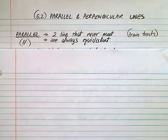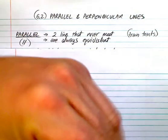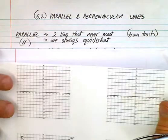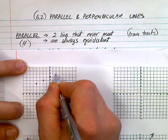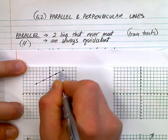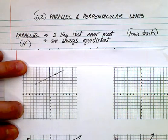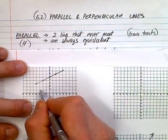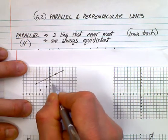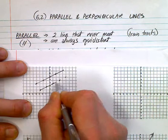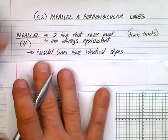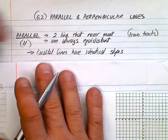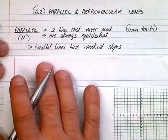Think about lines on a graph — what would constitute a parallel line? If I have a line with a certain slope, can you identify that slope? If I want a parallel line, the slopes must be identical. Parallel lines are easy — they have the same slope.